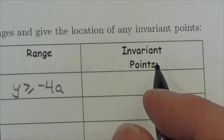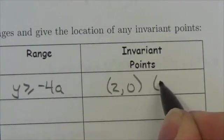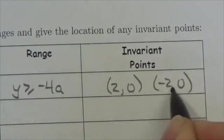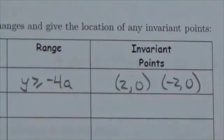If you solve, set that equal to 0 and solve, you're going to get 2, 0 and negative 2, 0. Those were the points on the x-axis of the original. That's not going to change under that vertical stretch.